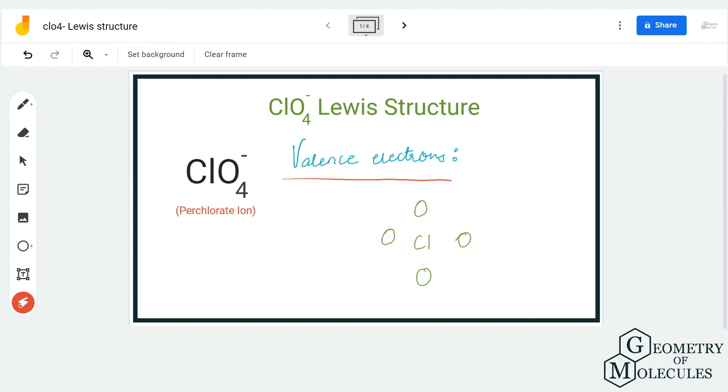To determine its structure, we are first going to look at the total number of valence electrons. Here we have one chlorine atom and four oxygen atoms. In total, we have 32 valence electrons for this molecule. We are also going to consider the additional electron that we have over here. As it has a negative charge, it means it accepts an additional electron, so make sure to count that electron as well.